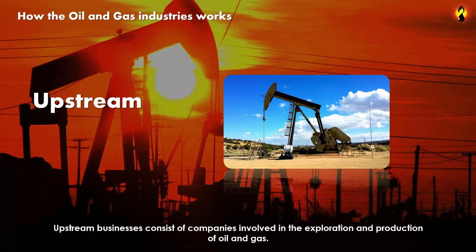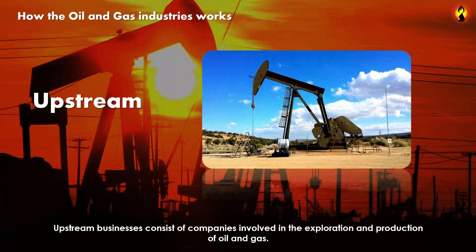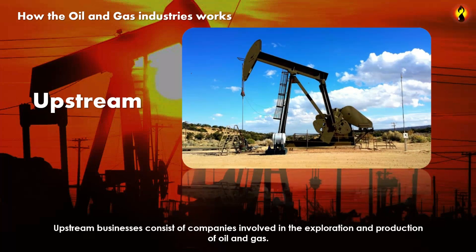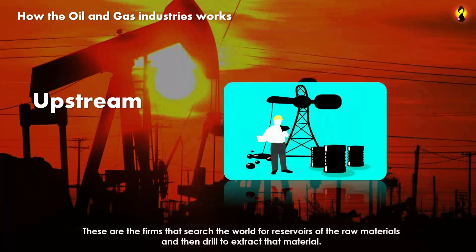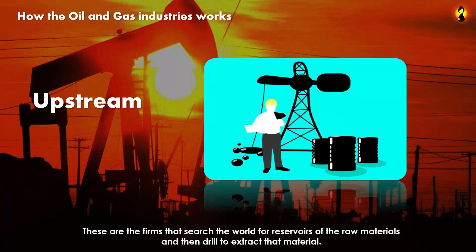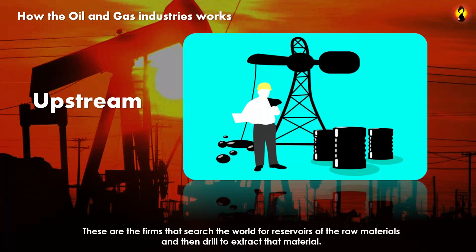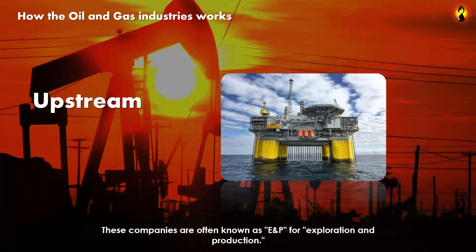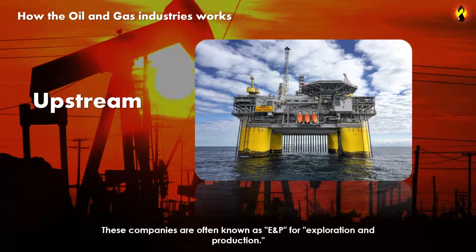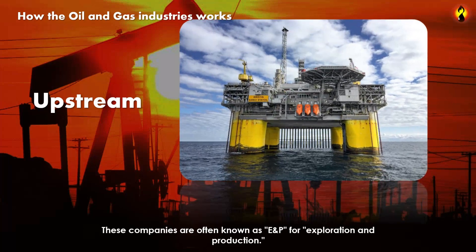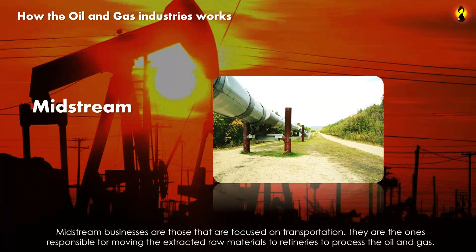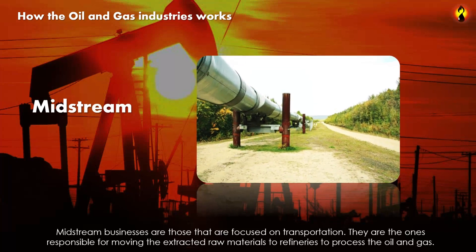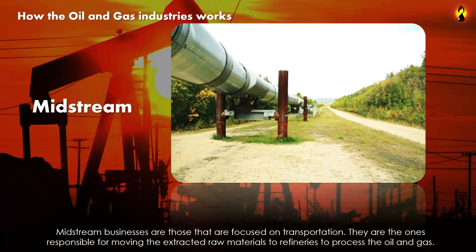Upstream businesses consist of companies involved in the exploration and production of oil and gas. These are the firms that search the world for reservoirs of raw materials and then drill to extract that material. These companies are often known as E&P, for exploration and production.